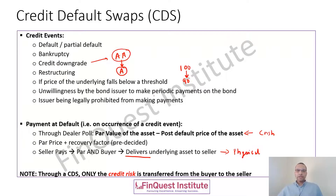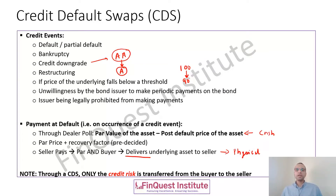An important point to remember for your exam: in a CDS, only the credit risk is being transferred from the buyer to the seller. Subsequently we will see other products where a component of market risk is transferred as well, but for CDS, remember that it is only the credit risk which is transferred from the buyer to the seller.